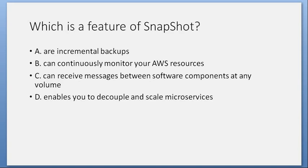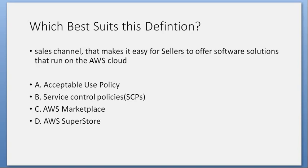Which is a feature of Snapshot? A. Are incremental backups. B. Can continuously monitor your AWS resources. C. Can receive messages between software components at any volume. D. Enables you to decouple and scale microservices. Answer: A. Are incremental backups. Which best suits this definition — a sales channel that makes it easy for sellers to offer software solutions that run on the AWS cloud? A. Acceptable use policy. B. Service control policies. C. AWS Marketplace. D. AWS Superstore. Answer: C. AWS Marketplace.